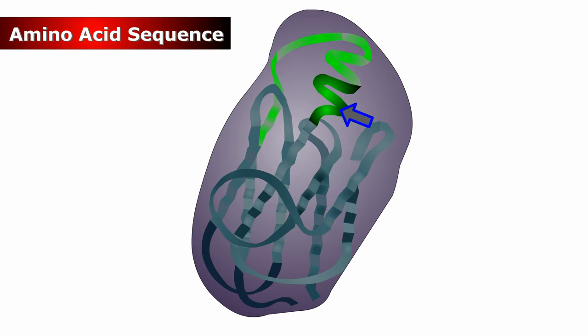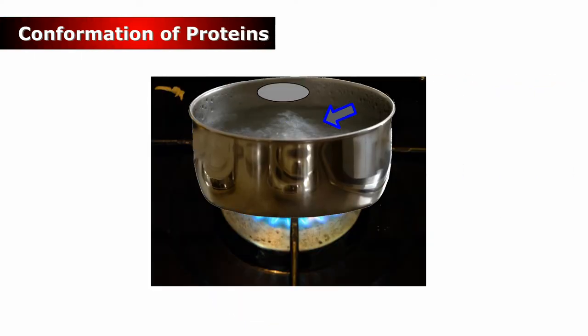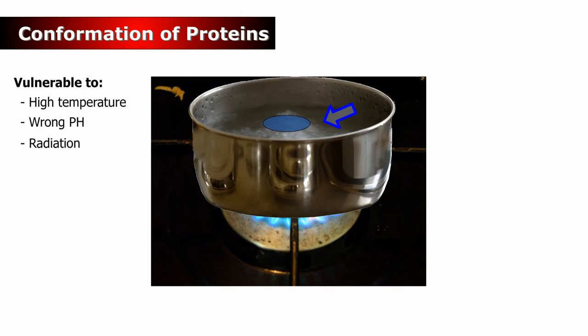The conformation determines the protein's function. The conformation of protein is vulnerable to destruction by high temperatures, the wrong pH, radiation, and chemicals. Many proteins are denatured this way.